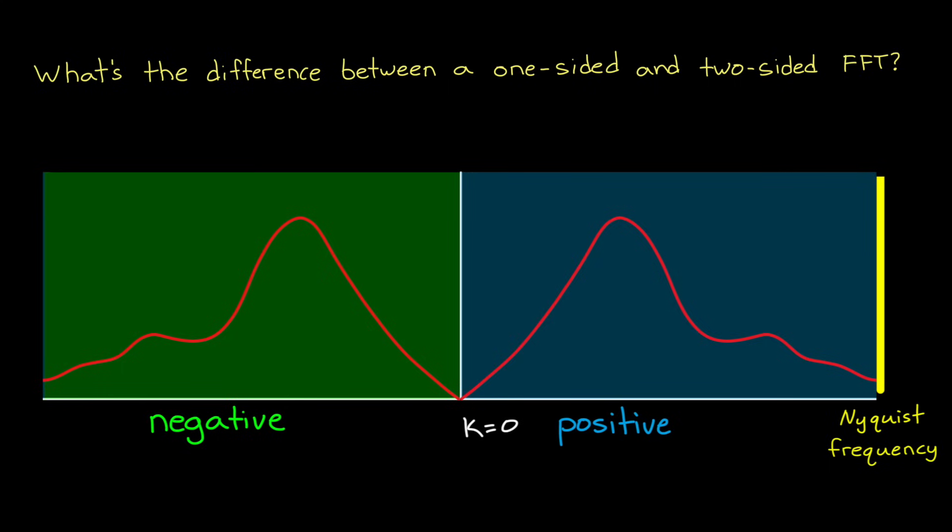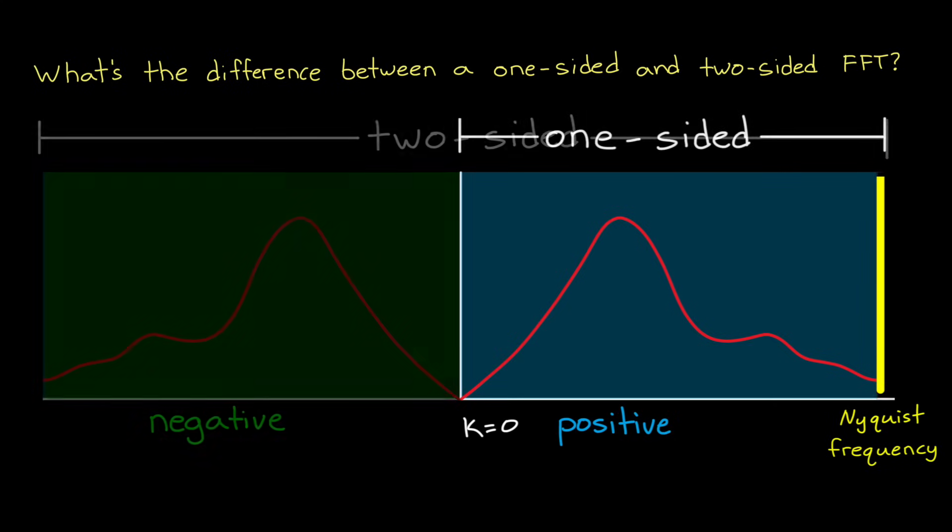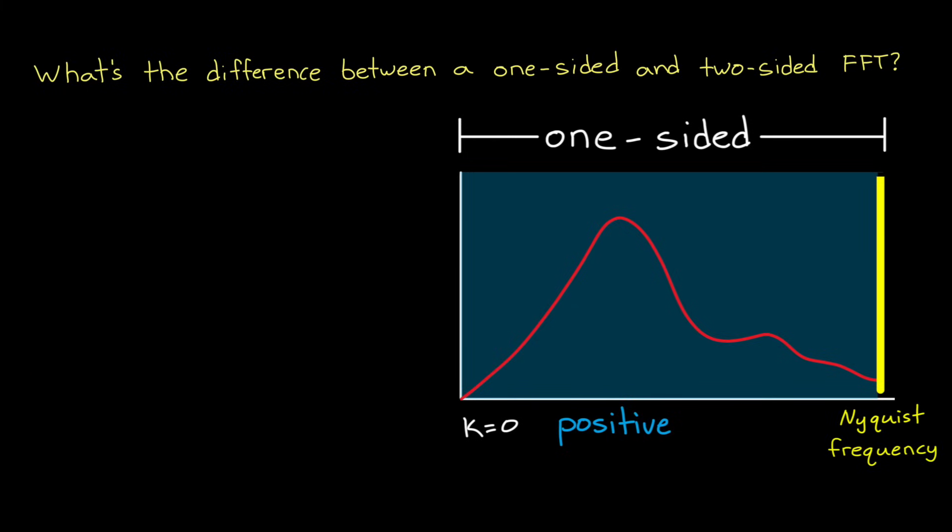So back to the question. If you're looking at the entire range of the FFT, then this is a two sided FFT. Whereas with a one sided FFT, you're just looking at the positive frequencies, just one side of the spectrum. And why would we do this? I mean, why would we throw away half of the information?